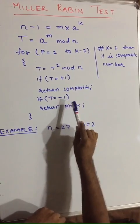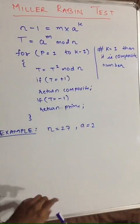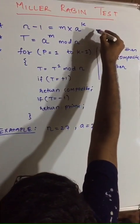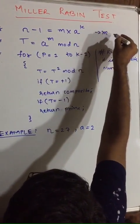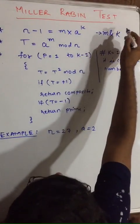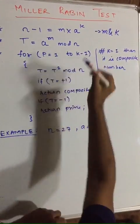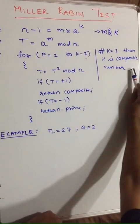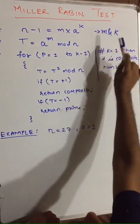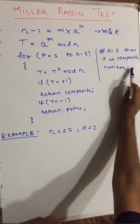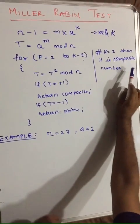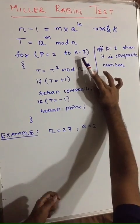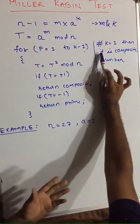If it returns minus 1, we say the number is prime. Using this equation we get our values of m and k, which we use in the for loop. If anywhere your k equals 1, you can directly say the number is composite, because k minus 1 would equal 0, meaning the loop will never start.